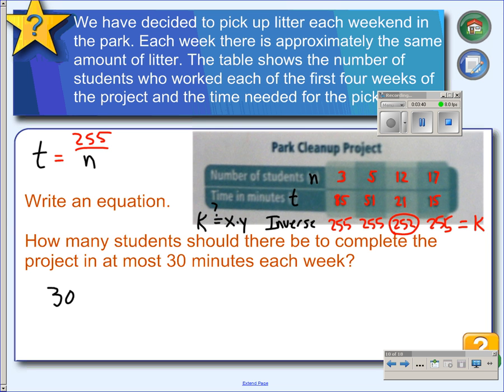If we want to be done in 30 minutes, we put 30 in for t, and we solve for n. You can multiply both sides by n, which will get the n out of the denominator.